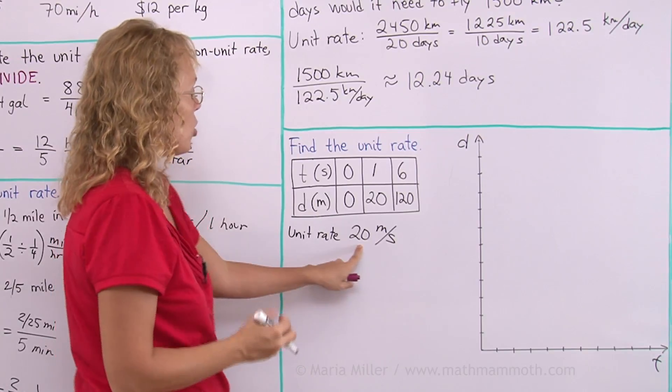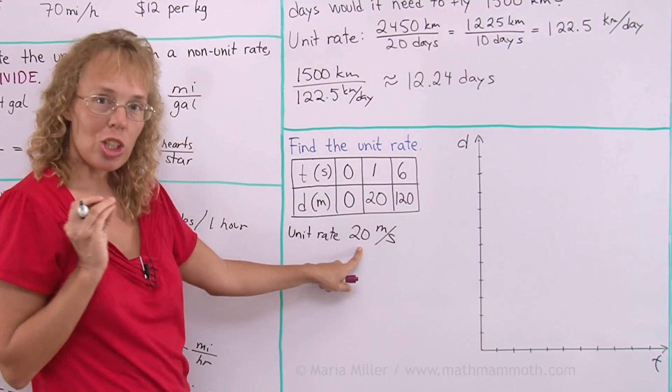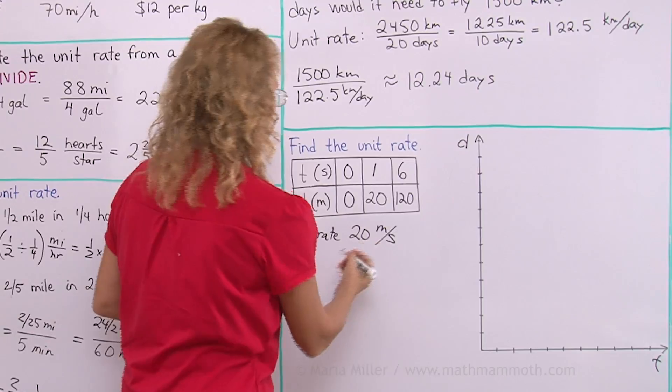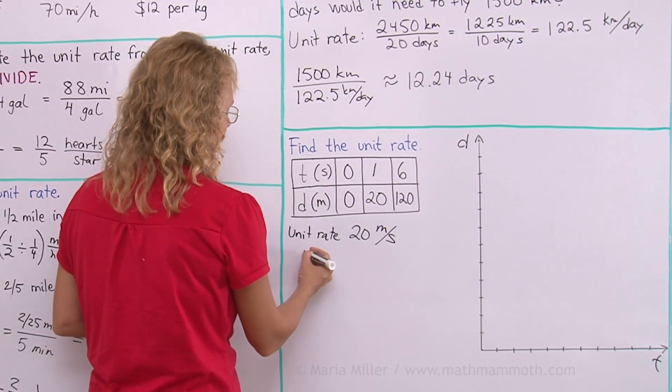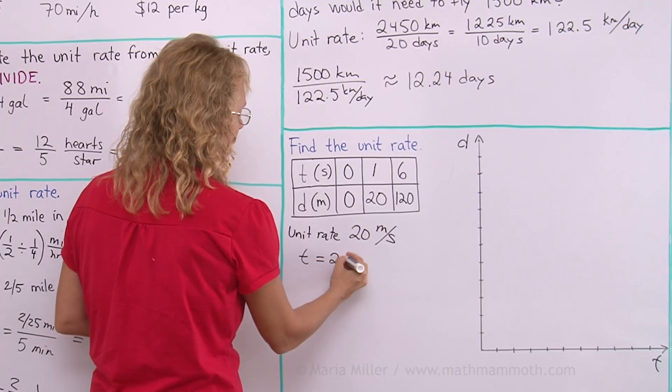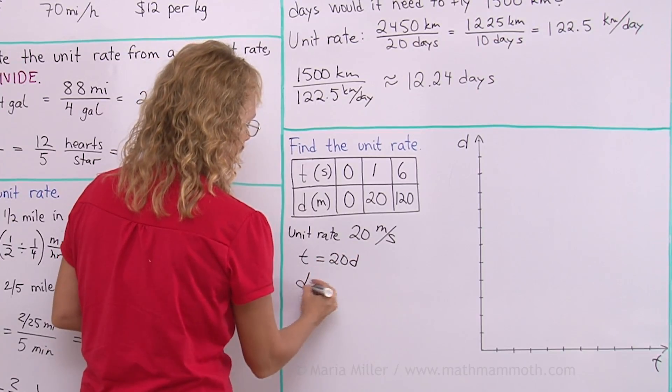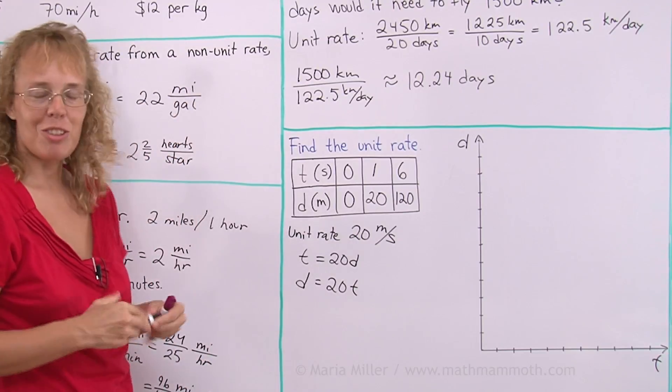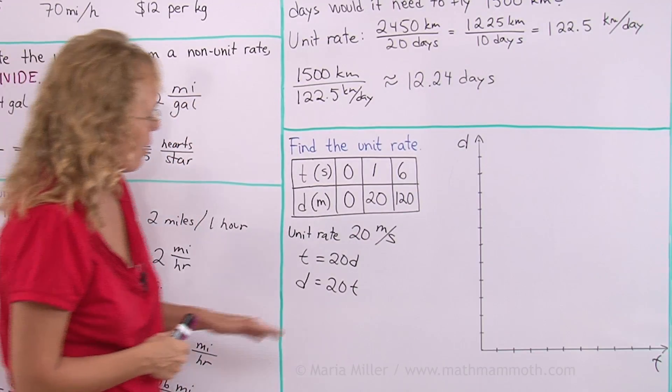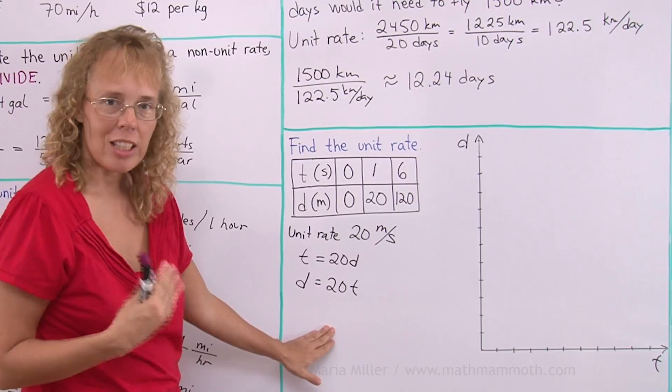And this unit rate becomes the slope of the line. And therefore, we will get an equation. You might consider it's either going to be t equals 20d or d equals 20t. If you don't remember how to do it, you can write both of those and think about it. Which one would it be? Which one is the correct equation?